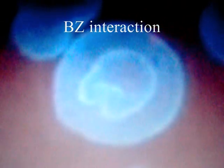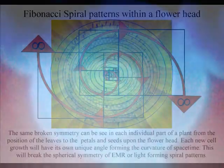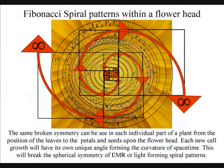This can be seen as a universal process of spherical symmetry forming and breaking. When the spherical symmetry is broken, energy levels cascade down, forming the Fibonacci spirals that we can see almost everywhere in our everyday life.